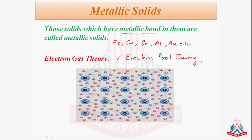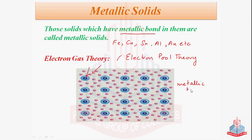These valence electrons can move from one part of the crystal to the other. According to the electron gas theory, the force which binds a metal cation to the number of electrons within its sphere of influence is called a metallic bond. This was the electron gas theory, or electron pool theory, explaining the metallic bond as the force binding the metal cation with the electrons present around it.